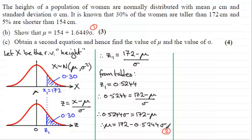And to do this, I think the best way would be just to take equation 2. And from that, we'll subtract 1. So we'll do equation 2, subtract equation 1. Obviously, it's not the only way we can solve these simultaneous equations. I'll leave it up to you. But if we do it this way, we've got μ take away μ, which is 0, equals 172 minus 154, that's 18. And then you've got minus 0.5244σ minus plus 1.6449σ. And that's going to give you minus 2.1693σ.